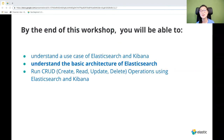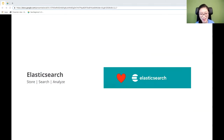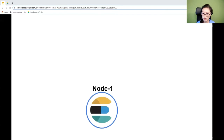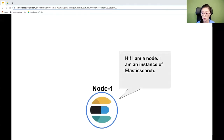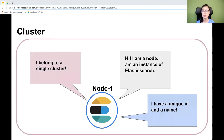Now that you understand when to use Elasticsearch and Kibana, we'll move on to the basic architecture of Elasticsearch. Elasticsearch is a powerful search and analytics engine known for its distributed nature, speed, and scalability — due to its unique architecture. When Elasticsearch is up and running, you have an instance of Elasticsearch also known as a node. Each node has a unique ID and a name, and it belongs to a single cluster.